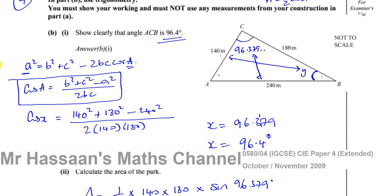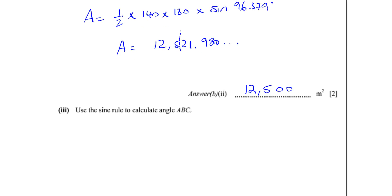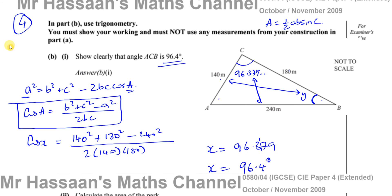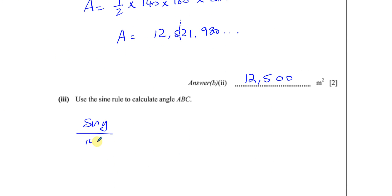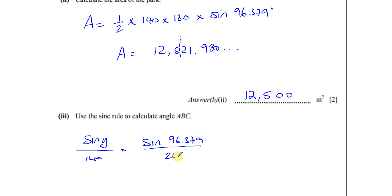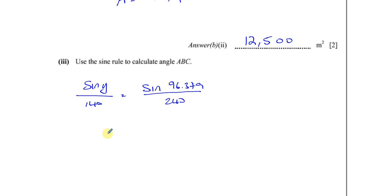So I can see here that sine y over 140 will give me the same ratio as sine 96.379 over 240. So that's what I'm going to use here to find the angle. So I can say the sine of y over 140 is equal to the sine of the angle that we found, which was 96.379 divided by, and the side opposite that angle was 240. So I can find what angle y is. I know that basically sine of y is equal to 140 times the sine of 96.379. Notice I use a more accurate form of this, over 240. So y is going to be inverse sine of all of this.